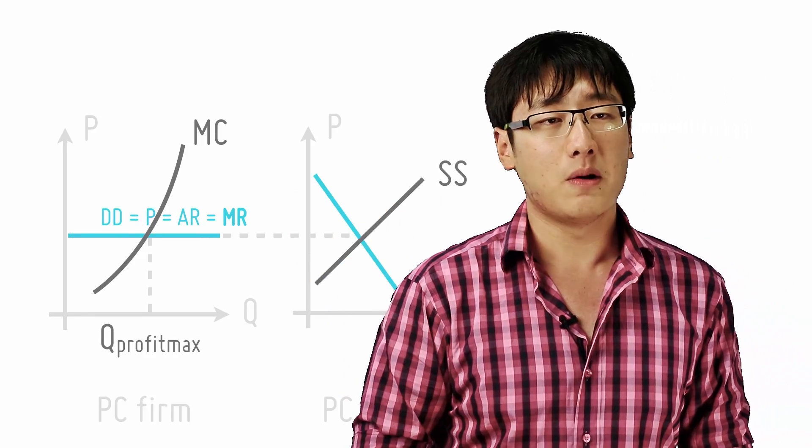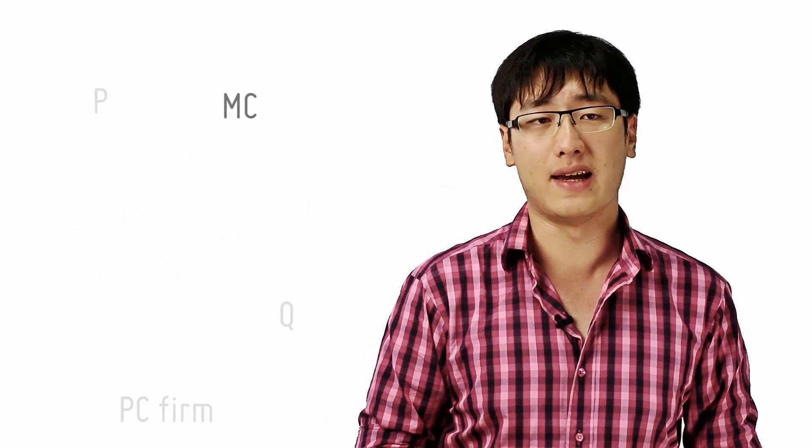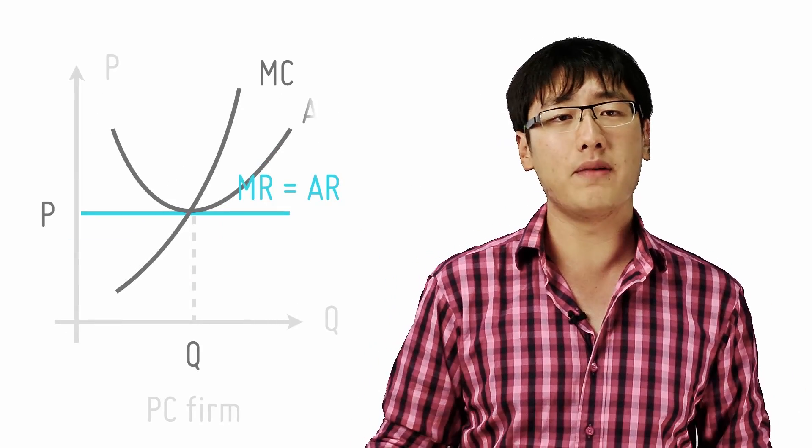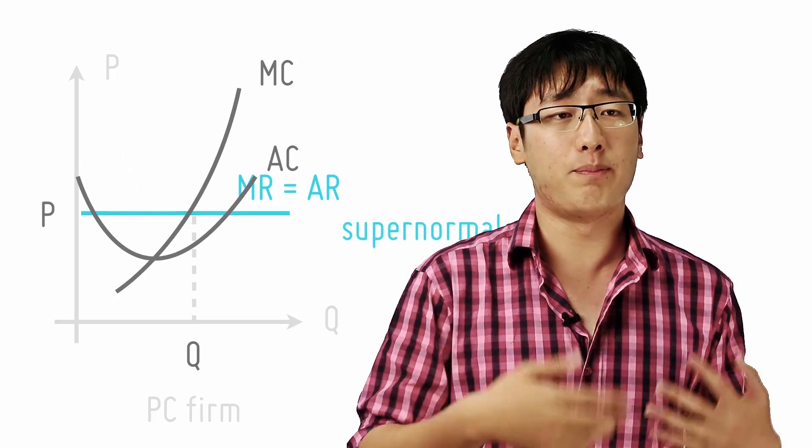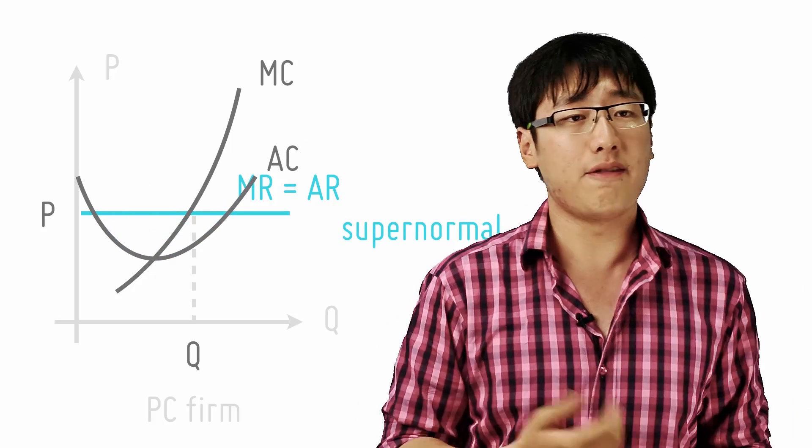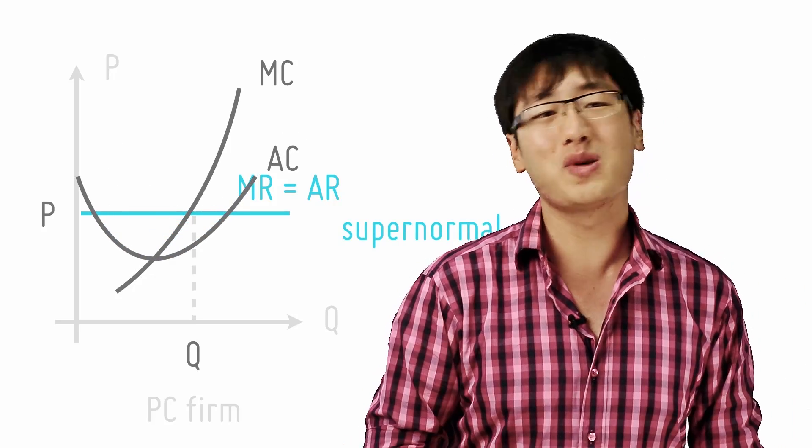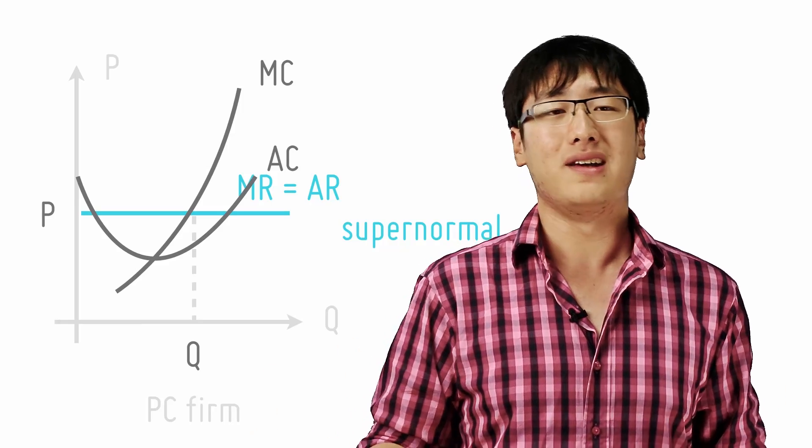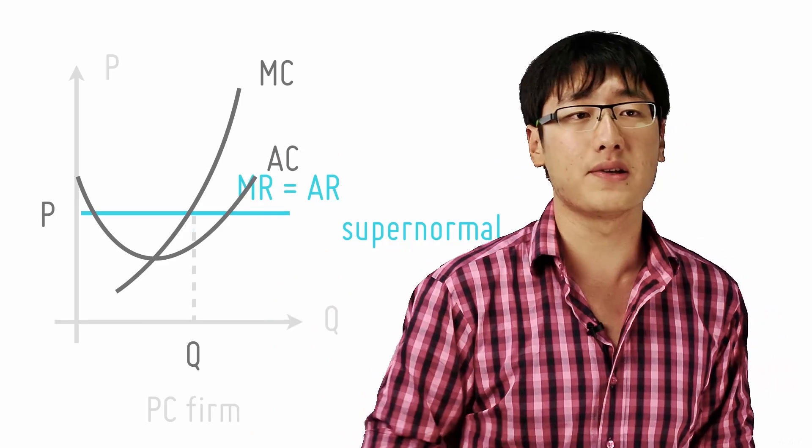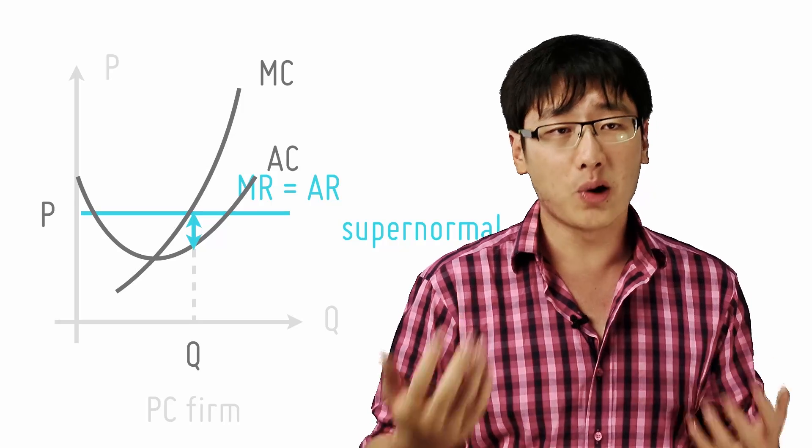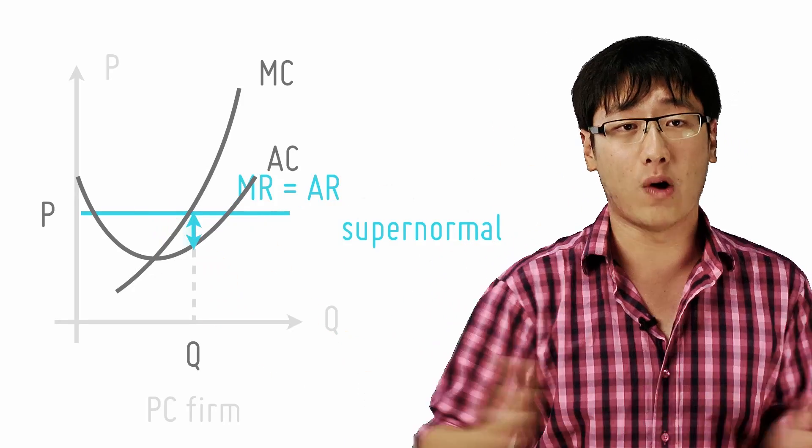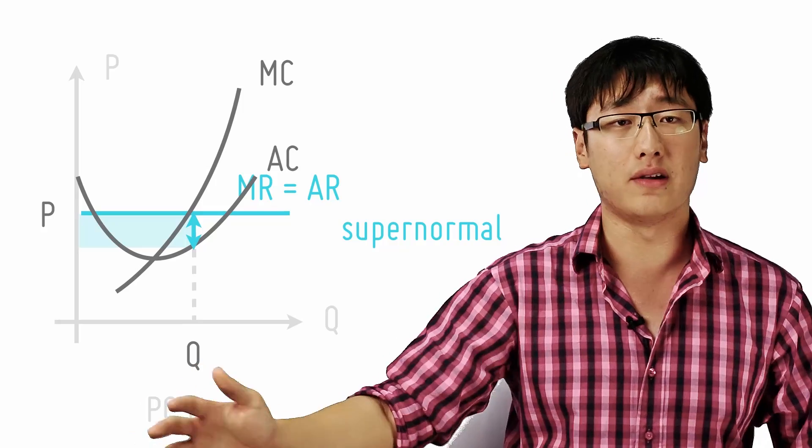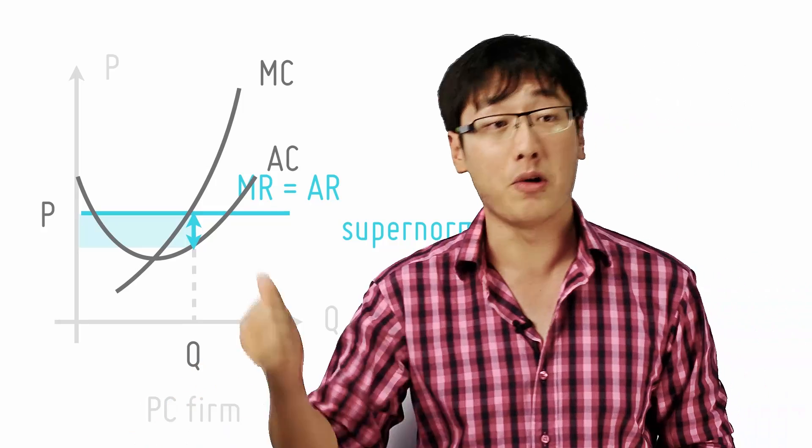But what about profit? Well there are three possible scenarios you can illustrate in the short run. If the firm's AC dips below the AR curve at the profit maximizing point Q, then the firm will earn supernormal profit. So supernormal profit per unit of Q is the vertical difference between AR and AC at Q. And the total supernormal profit is simply the vertical distance times the quantity, which gives this rectangle here.